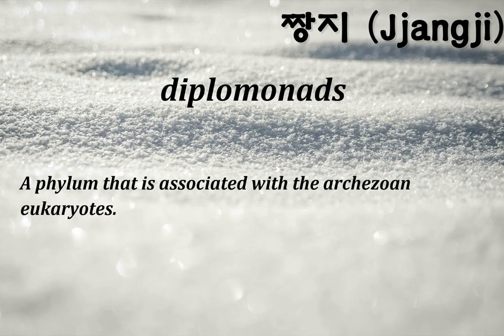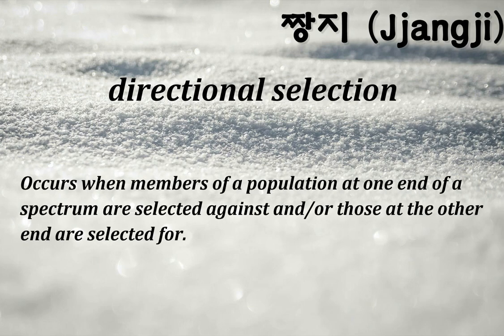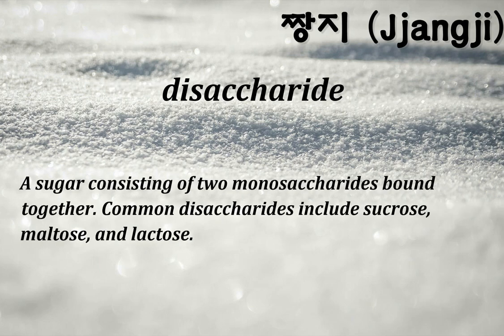Diplomonas: a phylum associated with the Archezoan eukaryotes. Directional selection: occurs when members of a population at one end of a spectrum are selected against and/or those at the other end are selected for. Disaccharide: a sugar consisting of two monosaccharides bound together; common disaccharides include sucrose, maltose, and lactose.